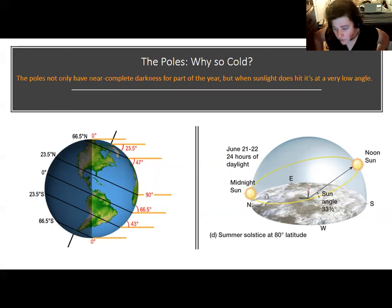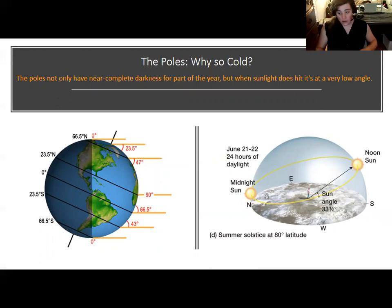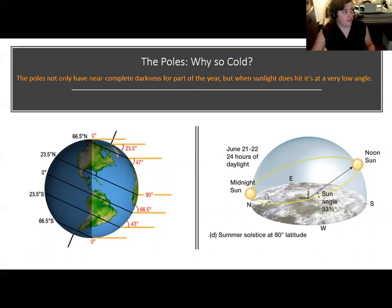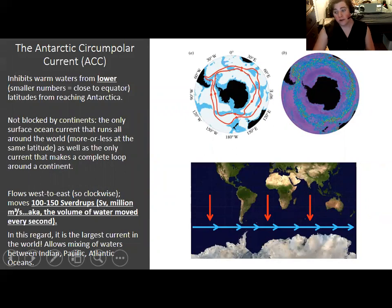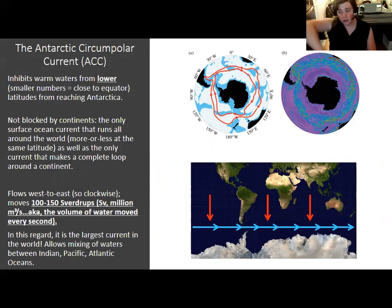The light at the poles also looks filtered, and this contributes to Earth's overall climate and circulation patterns. Antarctica is also isolated by the Antarctic Circumpolar Current — the only current that makes a complete loop around a continent. It is so isolated that there is a current that has developed around the entire continent. It flows west to east at a rate of 100 to 150 sverdrops, a unit referring to volume of water moved per second.